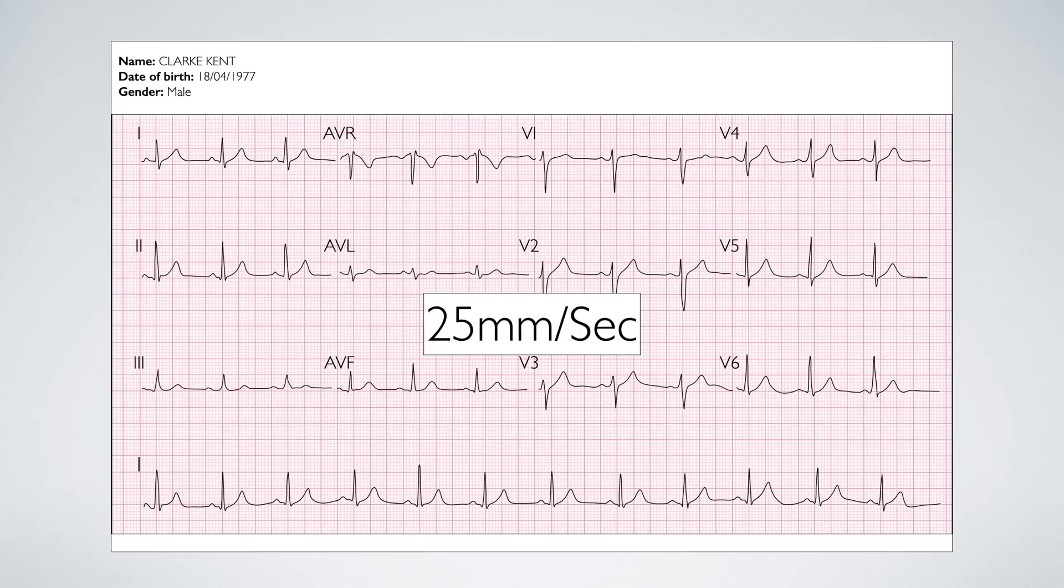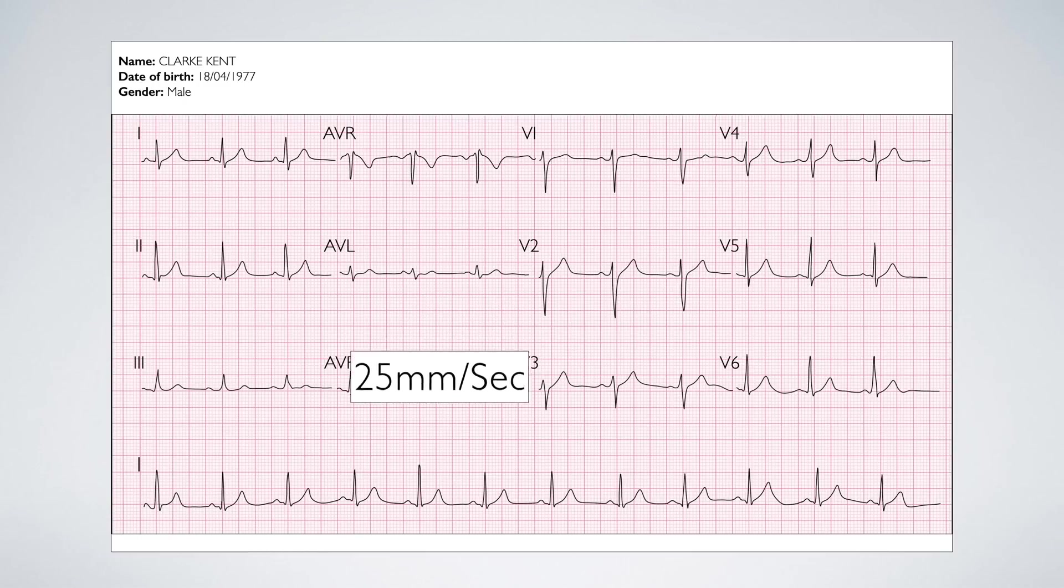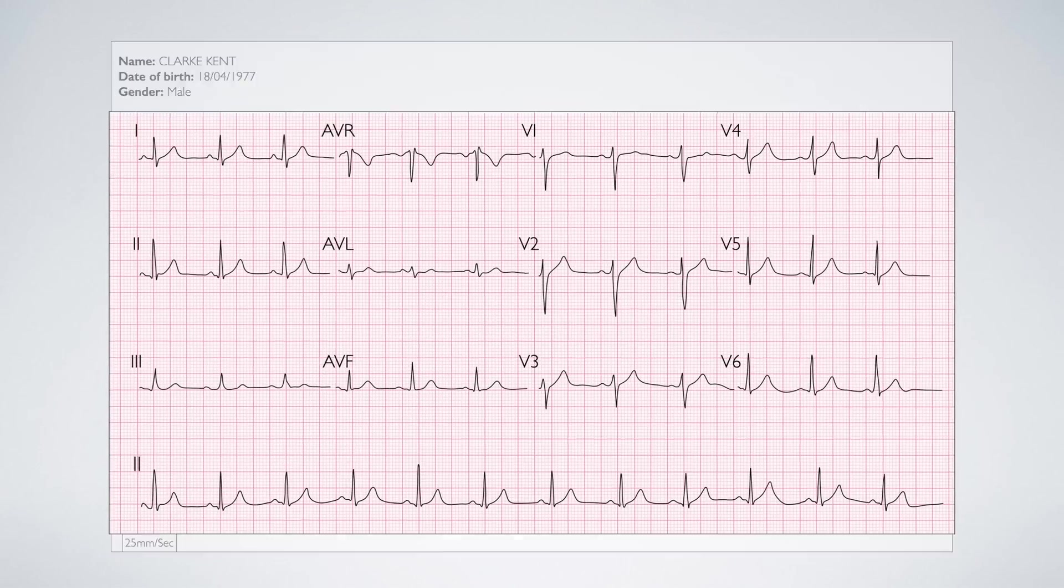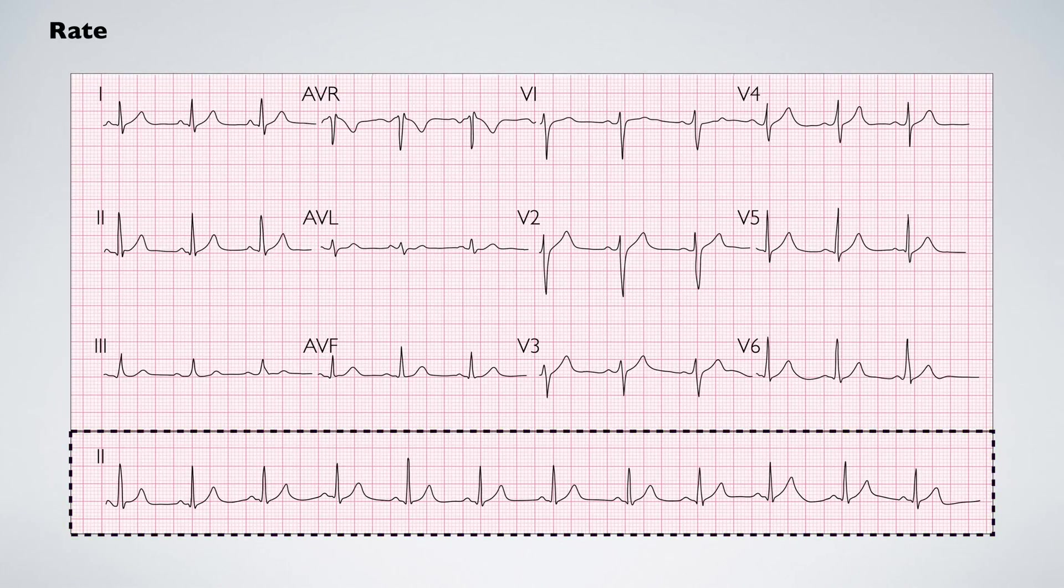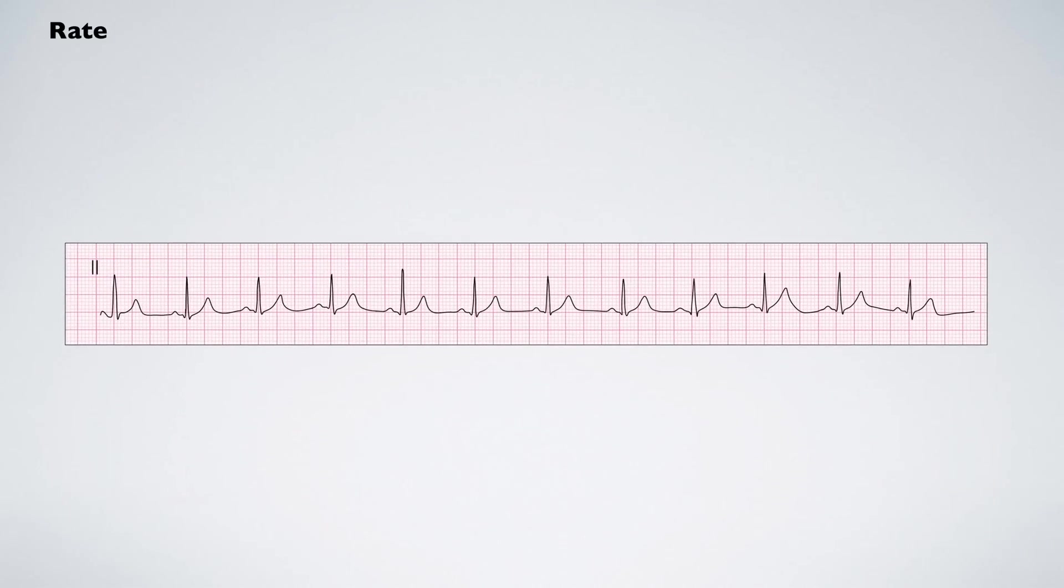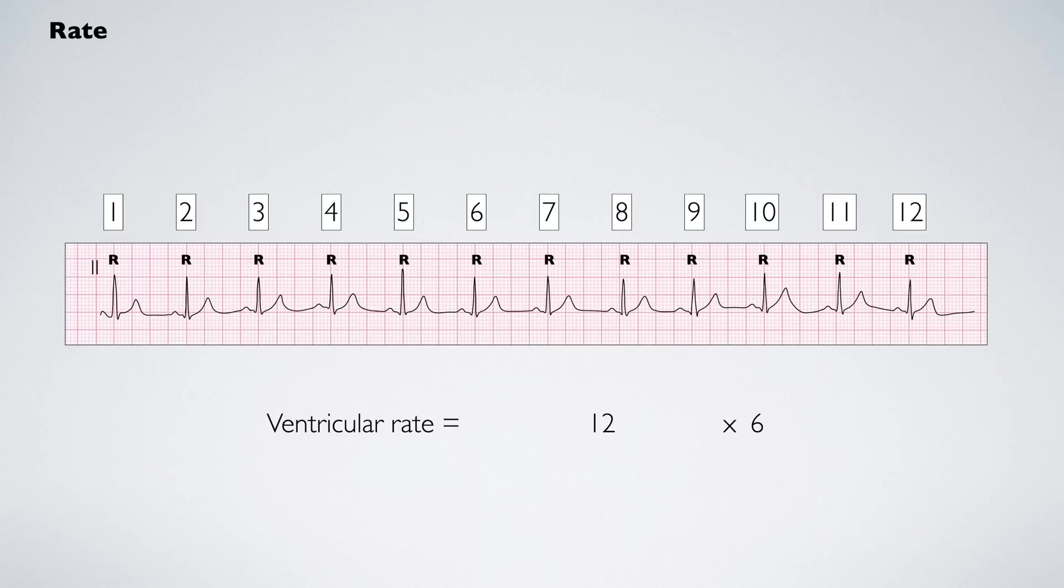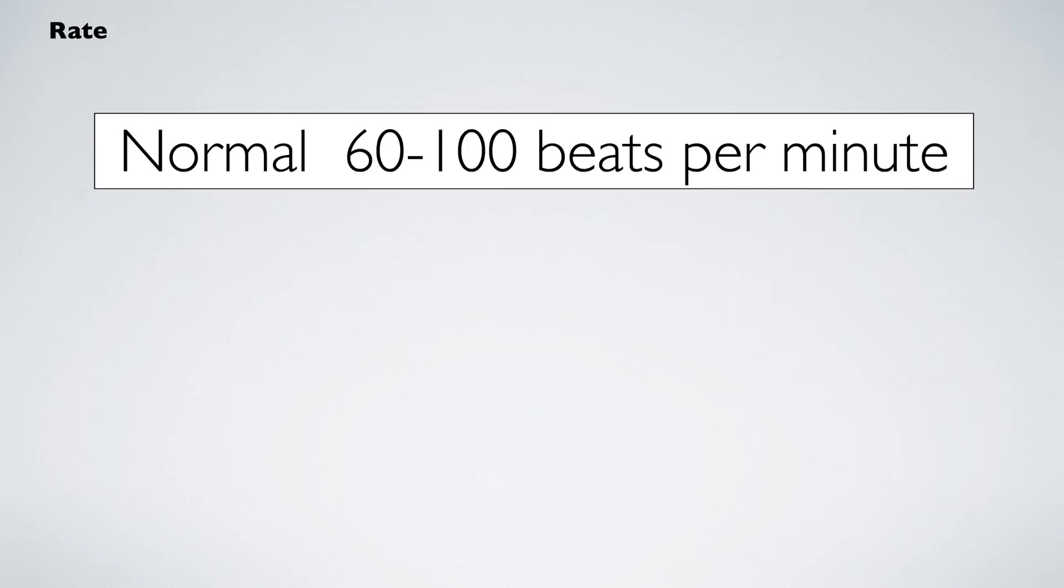We now move on to interpretation of the ECG, starting with the rate. First, locate the rhythm strip on the lower part of the ECG trace. Determine the rate by counting the number of R-waves and multiplying by 6. In this example, the ventricular rate is 72 beats per minute. A normal heart rate typically ranges between 60 to 100 beats per minute.